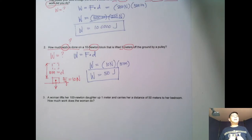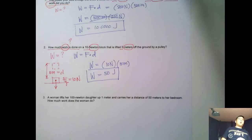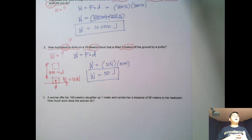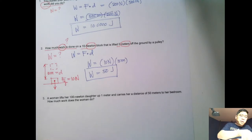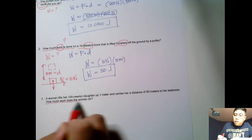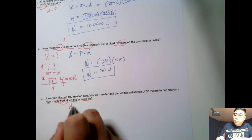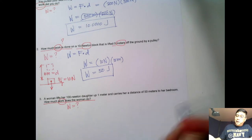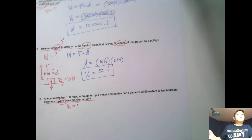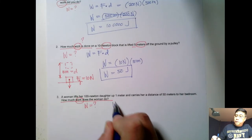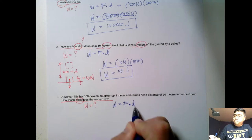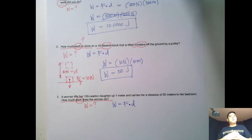Now for question number three: a woman lifts a 100-newton daughter up one meter, then carries her a distance of 50 meters to her bedroom. How much work does the woman do? We are being asked to solve for work. Work is force times distance, and just like the previous examples, we multiply the applied force by the distance.